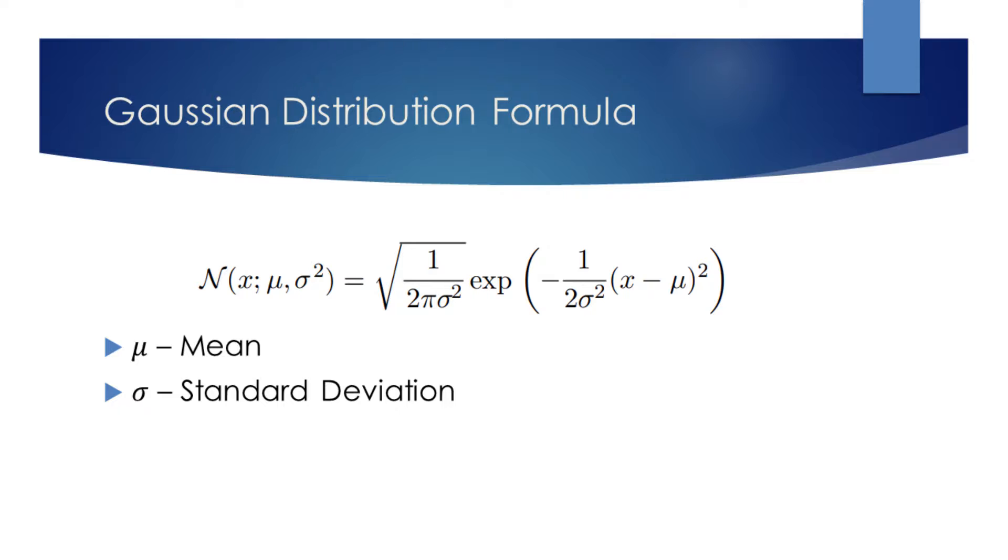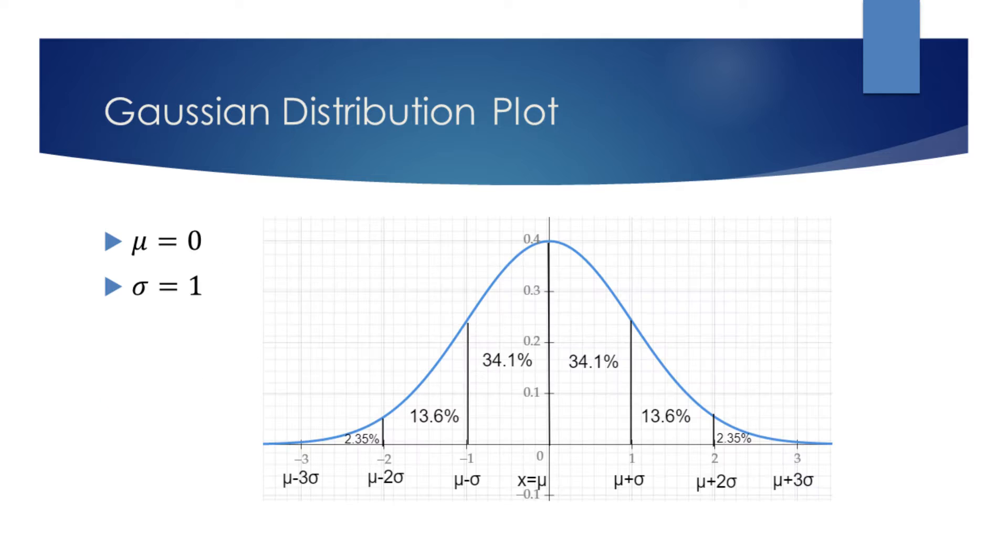Let's now see the plot of this function when mean is 0 and variance equals 1. The plot for the Gaussian distribution is also known as the bell curve.